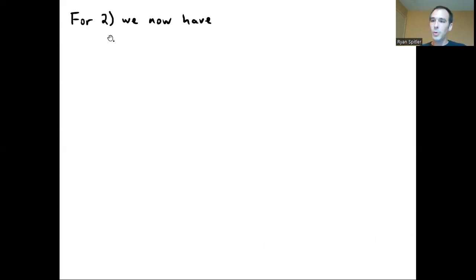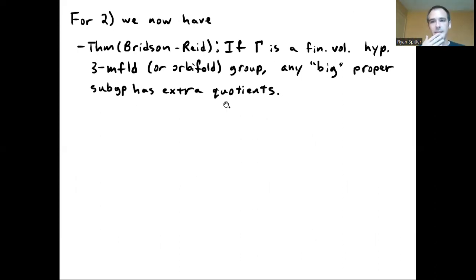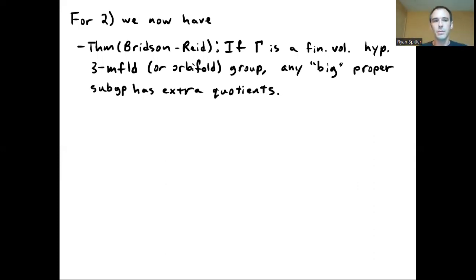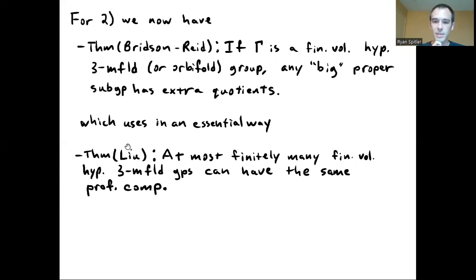For part two, if one wanted to do this now with the technology we have, there's a very nice result by Bridson and Reid that says if Gamma is any finite volume hyperbolic 3-manifold or orbifold group, then any large proper Zariski dense subgroup has extra finite quotients. This follows in a very essential way from the incredible work produced by Yi Liu on profinite rigidity questions involving hyperbolic 3-manifolds.